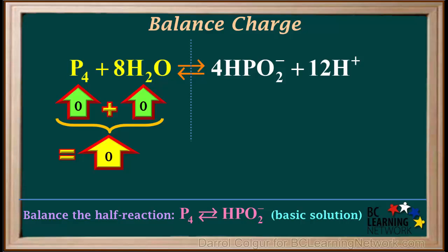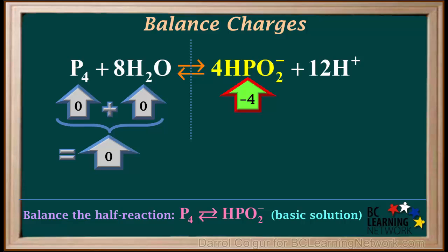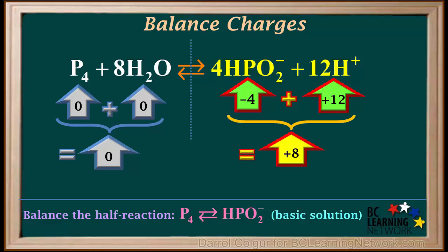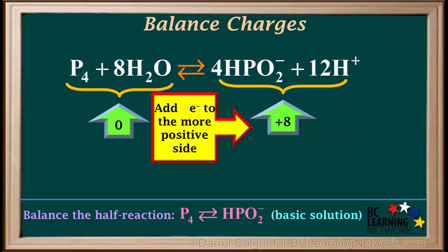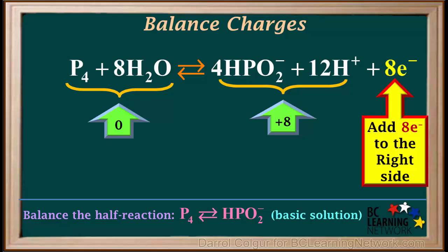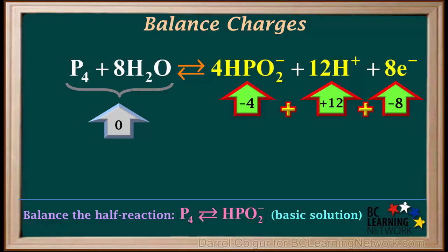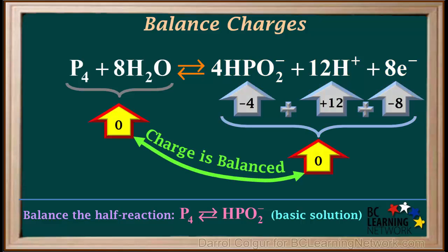Now we need to balance charge. Looking on the left side, P4 and 8 H2O both have a charge of 0, so the total charge on the left side is 0. Looking on the right side, we see that 4 HPO2⁻ ions have a total charge of negative 4, and 12 H⁺ ions have a total charge of positive 12. Therefore, the total charge on the right side is negative 4 plus 12, which is equal to positive 8. To balance charge, we must add electrons to the more positive side. Because the charge on the left side is 0 and the charge on the right side is positive 8, we must add 8 electrons to the right side. So the total charge on the right side is now negative 4 plus positive 12 plus negative 8, which add up to 0. So charge is now balanced.